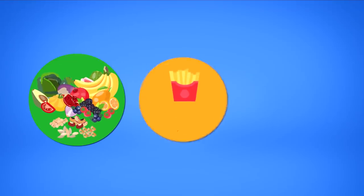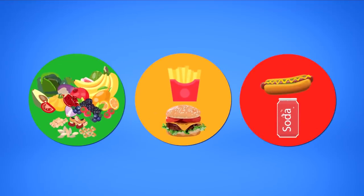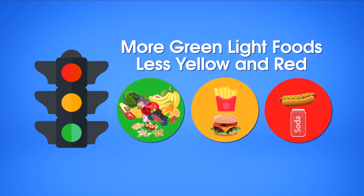In general, the more whole plant foods, and the fewer processed and animal foods, the better. So, more green light foods, and less yellow and red. Like running red lights in the real world, you may be able to get away with it once in a while, but I wouldn't recommend making a habit out of it.